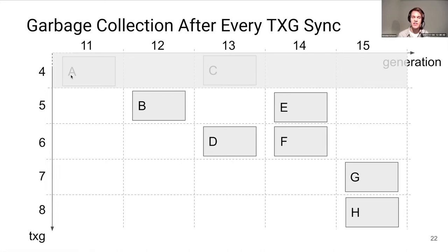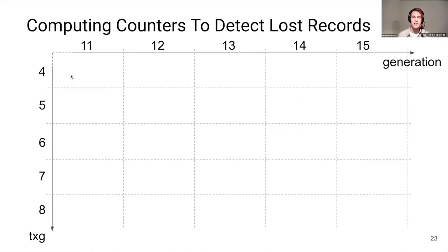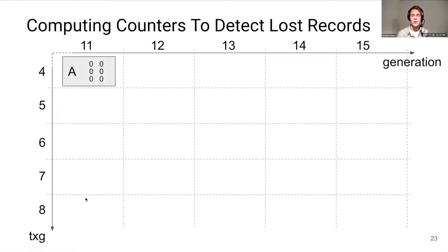However, unique IDs and generation numbers are not sufficient to detect lost entries at replay time. For this, we use a counter per transaction group. To explain how these are computed, we'll run through the example again. For the records of the first generation, all counters are set to zero. After writing a generation, we sum up how many records were written in each transaction group, and this running sum is kept in a table called the counters table.